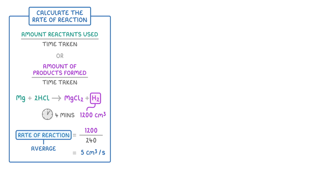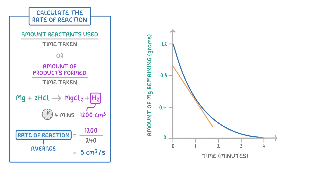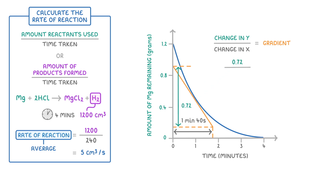Before we finish, I just want to point out that we could also have done the same thing with a graph that plotted the amount of magnesium remaining against time. This time though, the graph would have started with however many grams we used in our reaction — in this case 1.2 grams — and then would have declined rapidly at first, but then more slowly. So if we wanted to find the rate of reaction at one minute, we'd just do the same process as before: find the 1 minute point on our curve, draw our tangent at that point, and use that line to figure out our change in y, which is about 0.72 grams, and our change in x, which is 1 minute 40 seconds, or 100 seconds. And finally we'd divide our change in y by our change in x — so 0.72 divided by 100 seconds — to find our rate of 0.0072 grams per second.